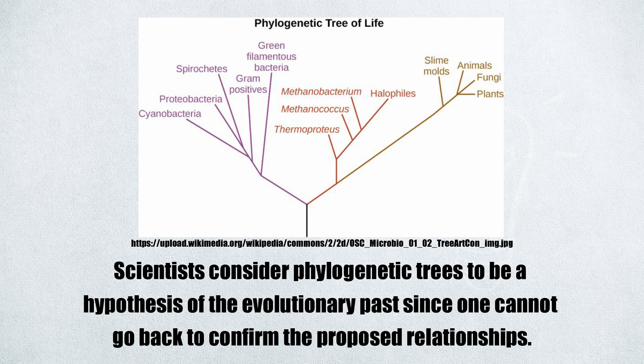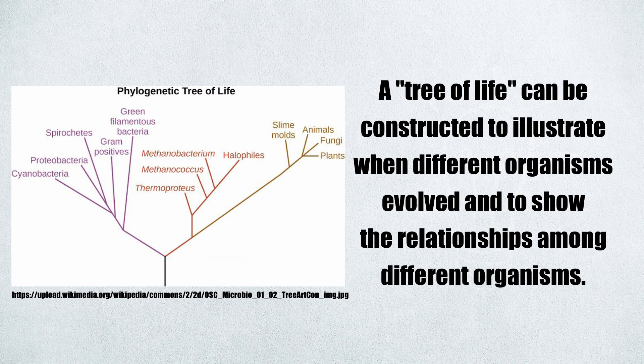Scientists consider phylogenetic trees to be a hypothesis of evolutionary past, since one cannot go back to confirm the proposed relationships. In other words, a tree of life can be constructed to illustrate when different organisms evolved and to show the relationships among different organisms. A phylogenetic tree can be read like a map of evolutionary history.